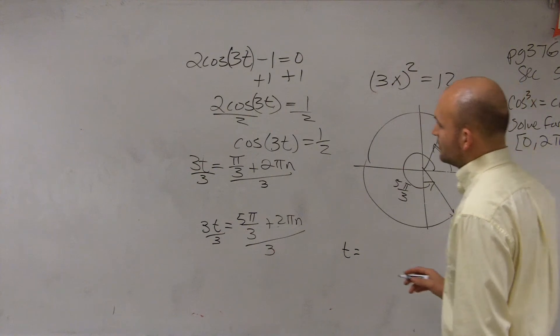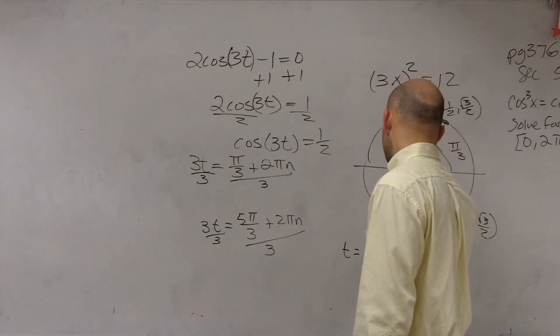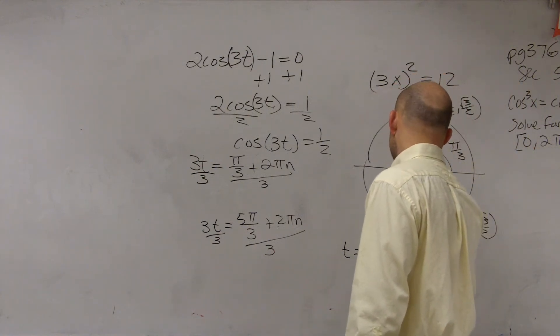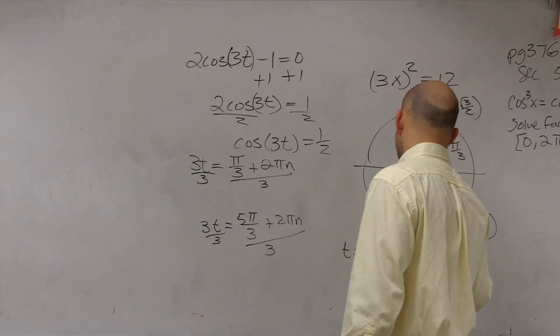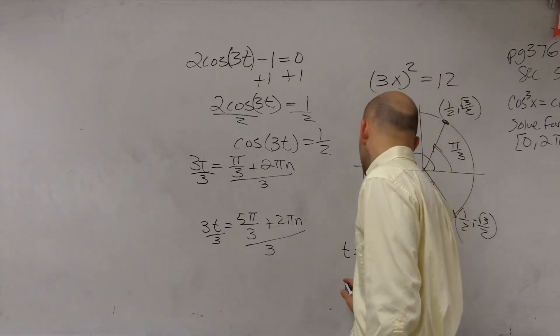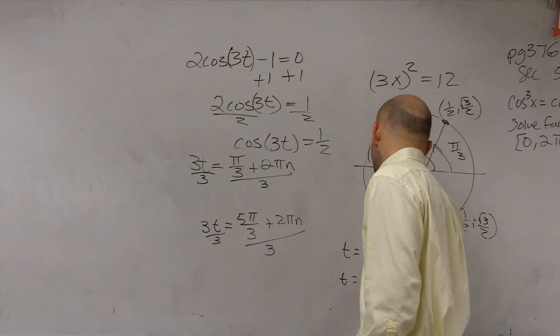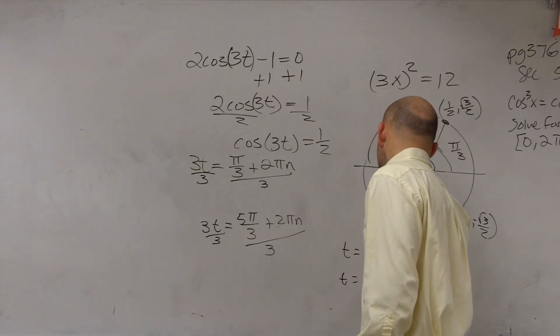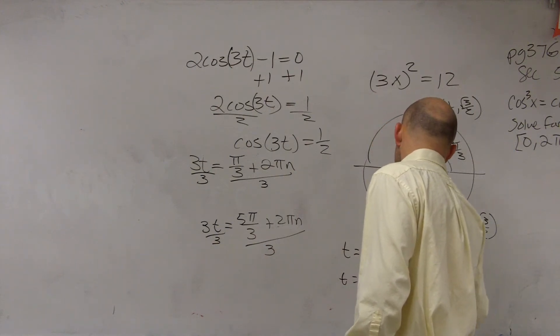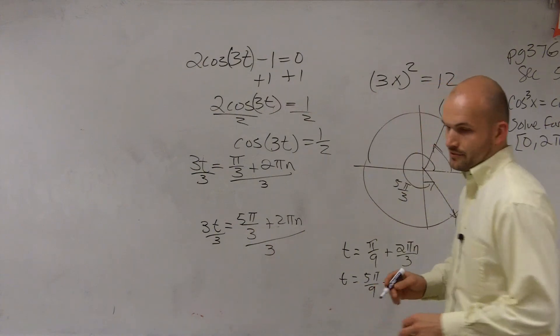And your final answers will have. So divide by 3, so you're going to have pi over 9 plus 2 pi n divided by 3. And here you have t equals 5 pi over 9 plus 2 pi n divided by 3.